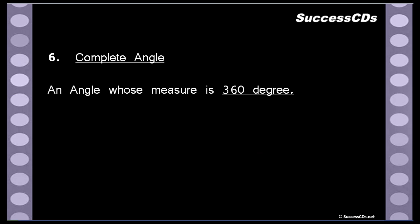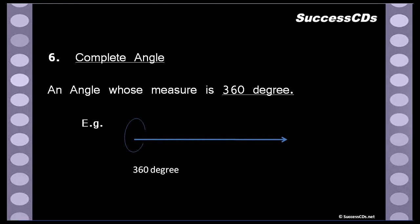Next we move forward to complete angle. An angle whose measure is 360 degrees — that is, you start from a point and you reach that point again. For example, if we start running in a park from a point and when we come back to that same point again, we say we have completed one round. That one round is of measure 360 degrees.